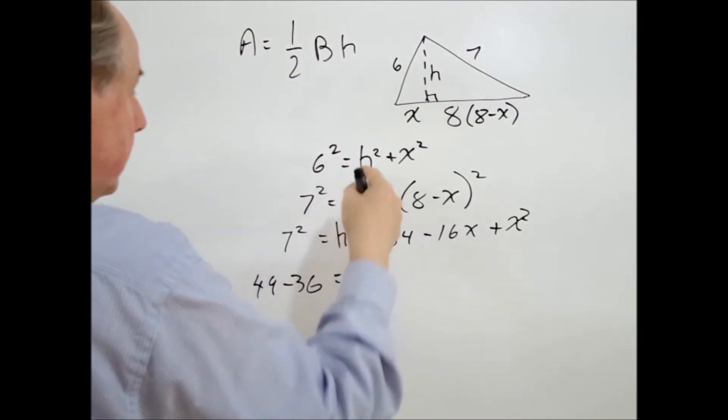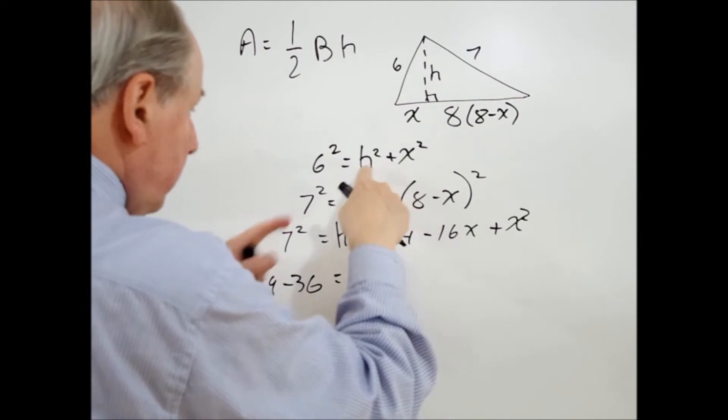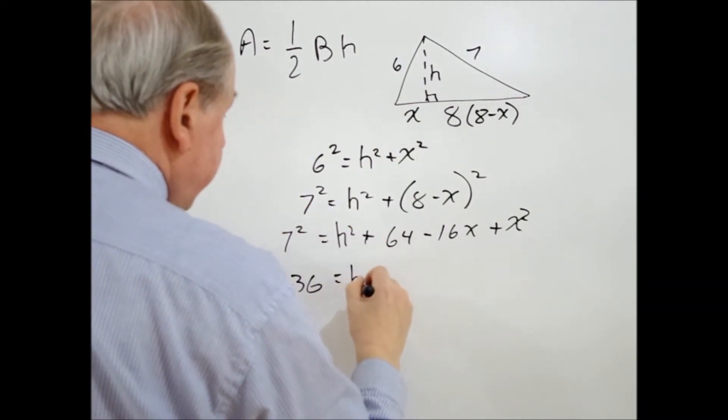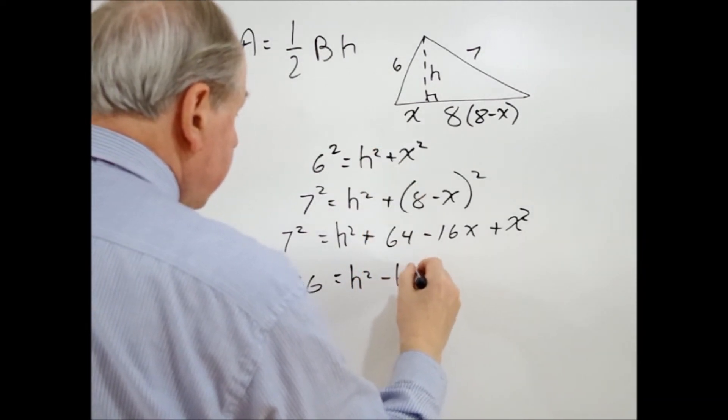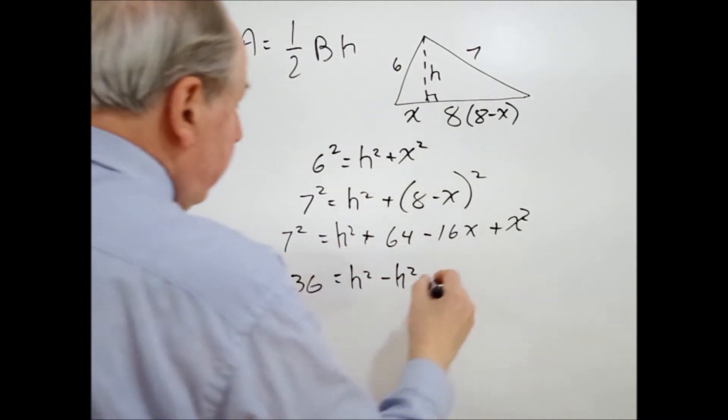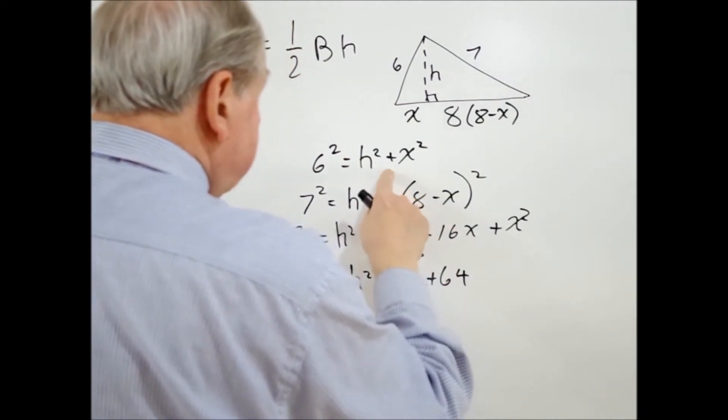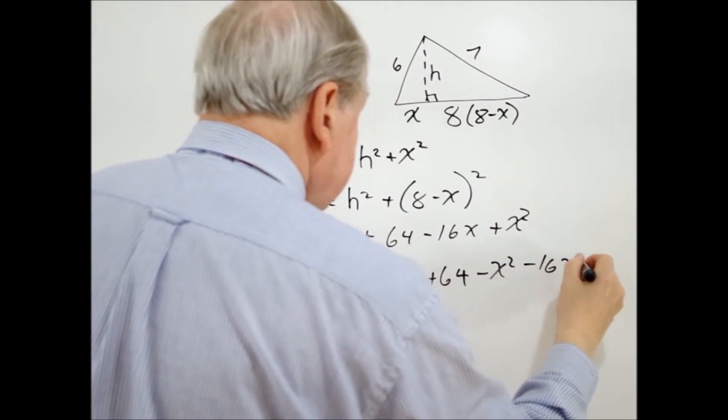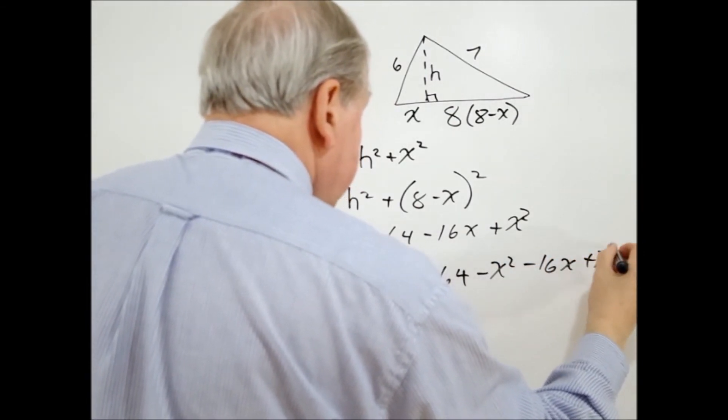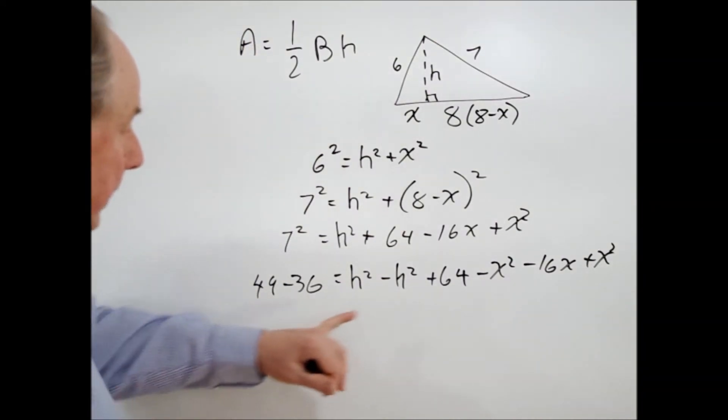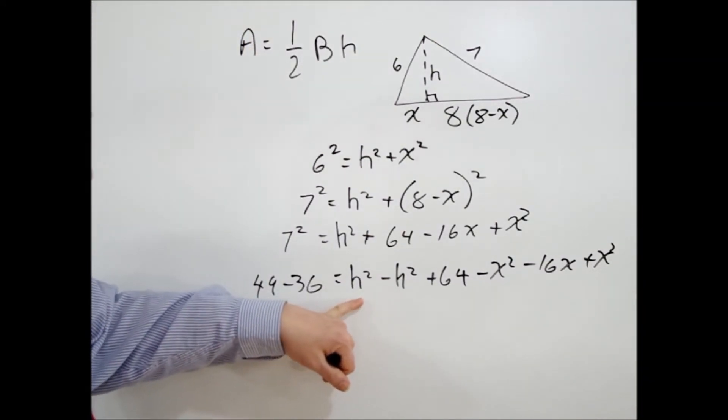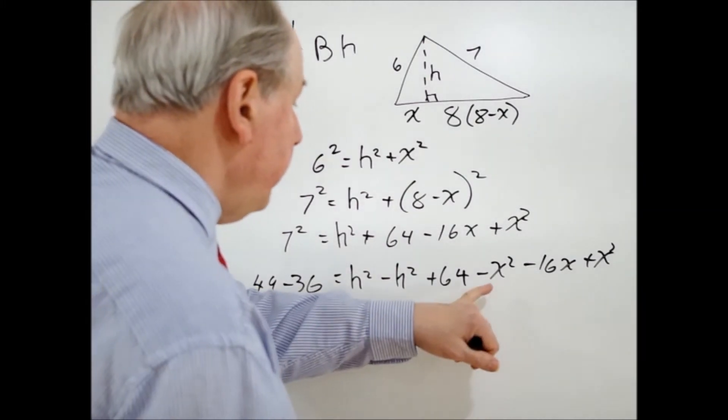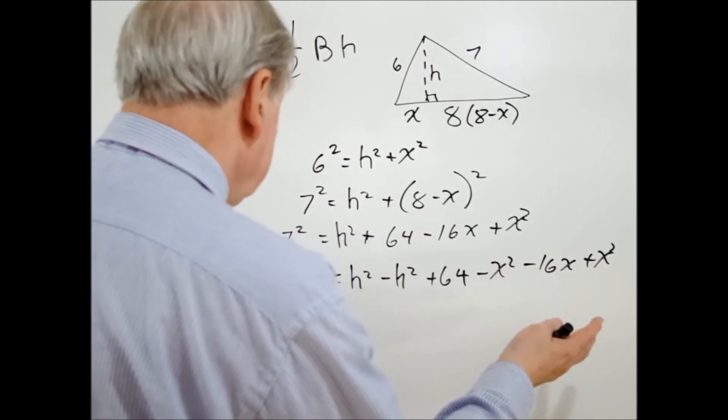And this one here, we're going to be subtracting it from this one. So this H squared remains, but we're subtracting this H squared. So they will disappear. And we have plus 64 minus X squared minus 16X and plus X squared. So the next step would be to get rid of the H's because H squared is subtracted from H squared. And likewise here, we have a minus X squared and a plus X squared. So we can just subtract those.